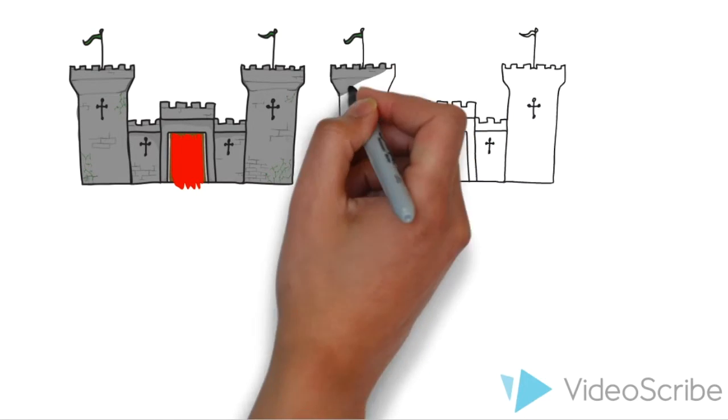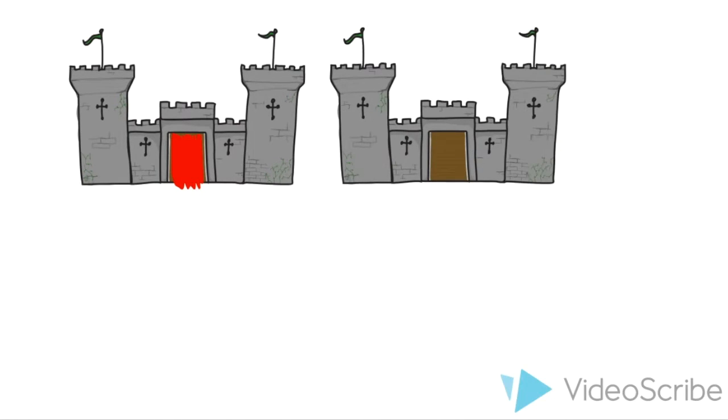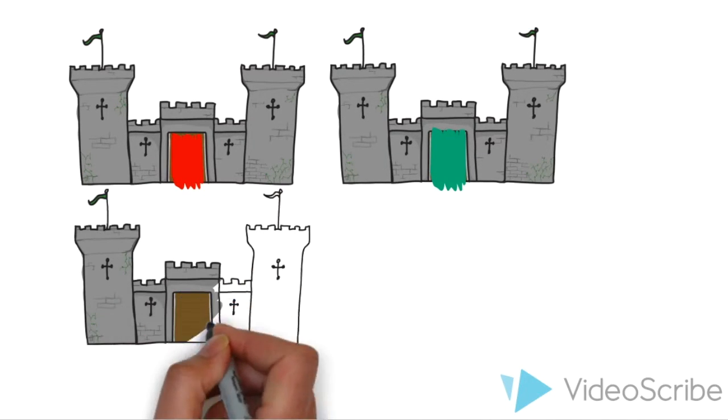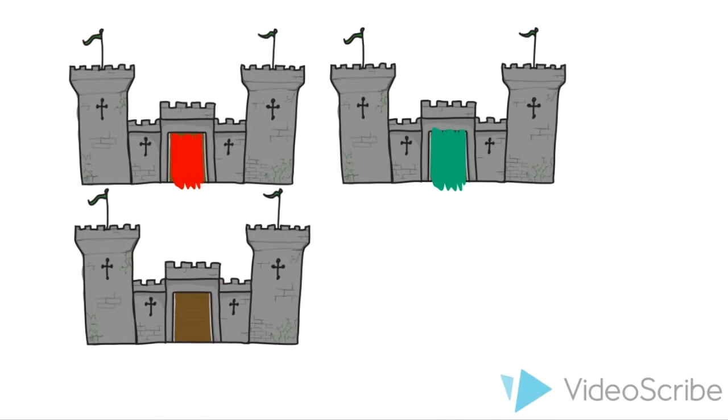You notice there is a red gate, a green gate, a gate with a seven, and a gate with a four. How many gates do you have to pick to prove this theory? Which gate do you choose?